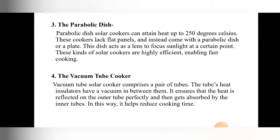The third type is the parabolic dish type solar cooker. Parabolic dish solar cookers can attain heat up to 250 degrees Celsius. Instead of a flat planer, it uses a parabolic dish or plate that focuses sunlight at certain points. This kind of solar cooker is highly efficient, enabling fast cooking.